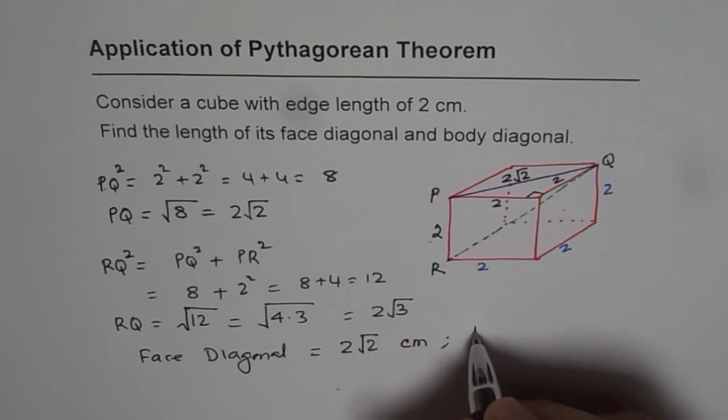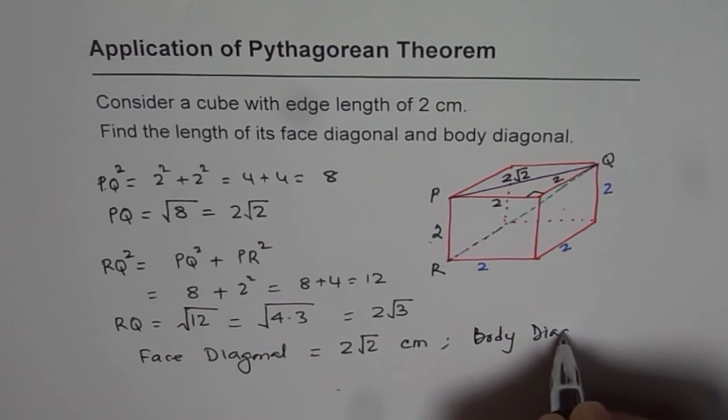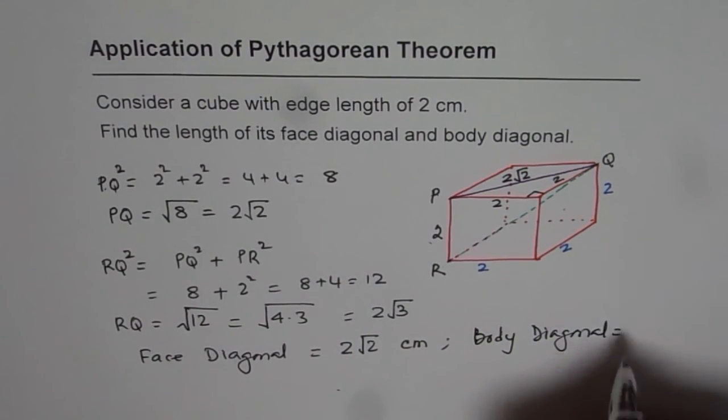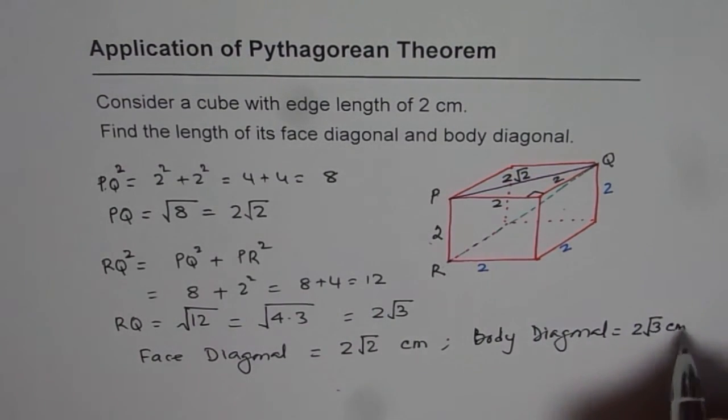And the body diagonal is equal to 2 square root of 3. Since all the units are in centimeters, that is how we can get our answer. I hope you appreciate it. Thank you.